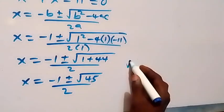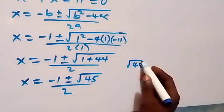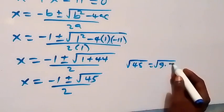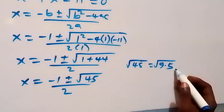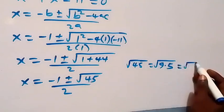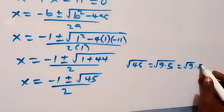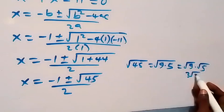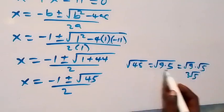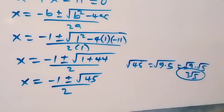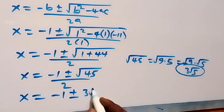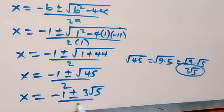Here, root 45 we can write as root 9 times 5, which we can separate as root 9 times root 5, which is the same thing as 3 root 5. So root 45 here can be written as 3 root 5. We now have x equals to minus 1, plus or minus 3 root 5, over 2.